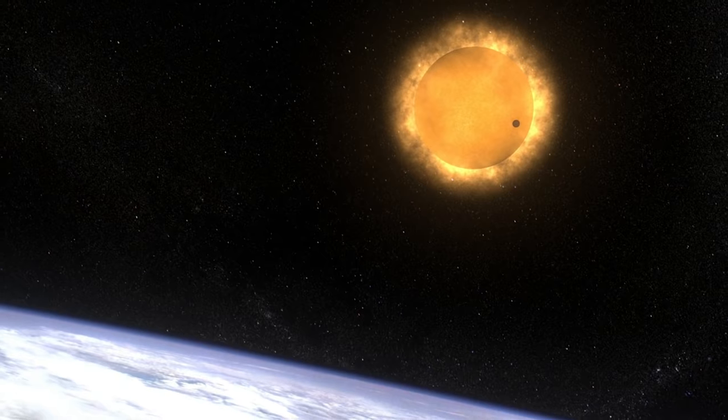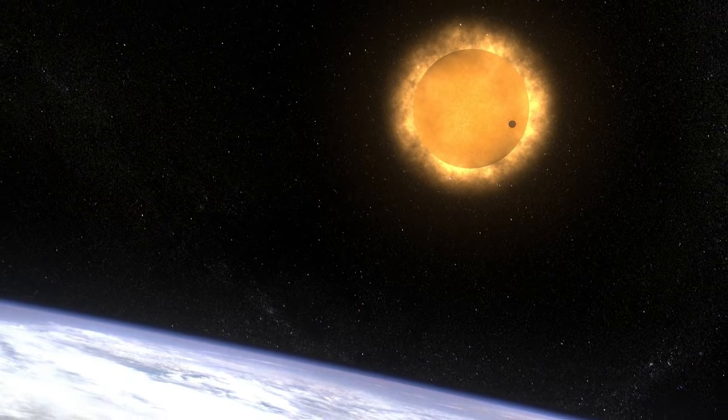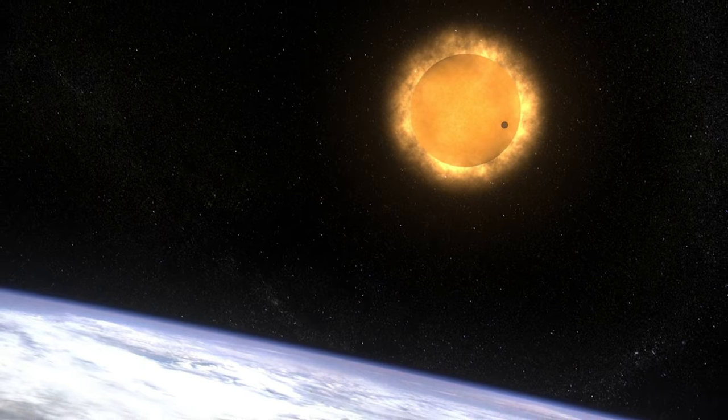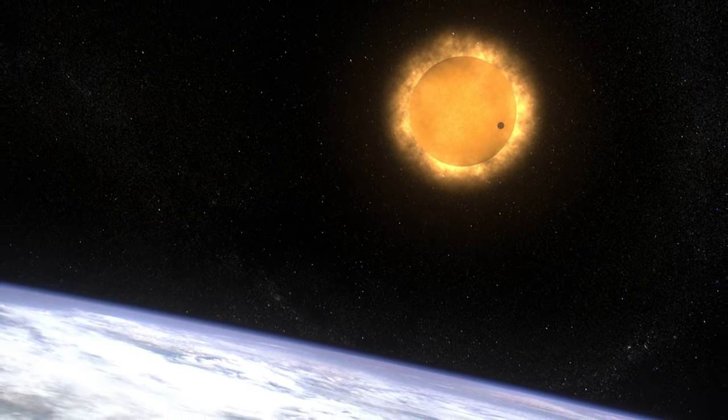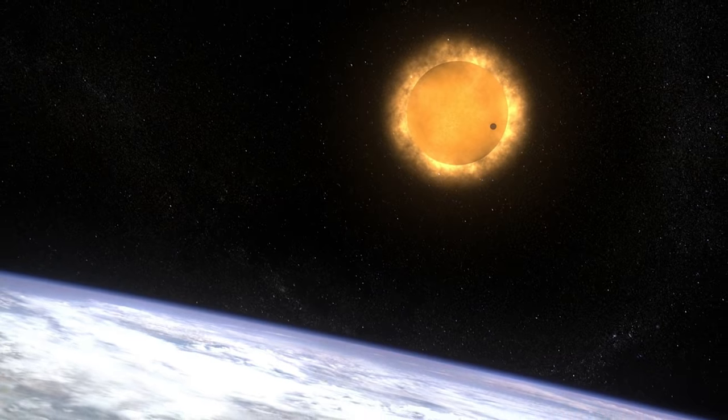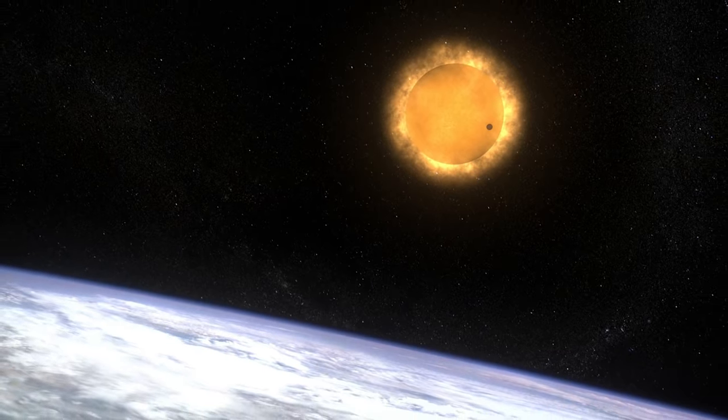But what about Venus? Sure, its surface is the very definition of hell, with an average temperature of 471 degrees Celsius, but new engineering proposals, as well as new research on Venus's atmosphere, may prove that not only is Venus a great choice for our home away from home, but that it might be the only choice. In the video today, 10 Reasons Why a Settlement on Venus is a Good Idea.